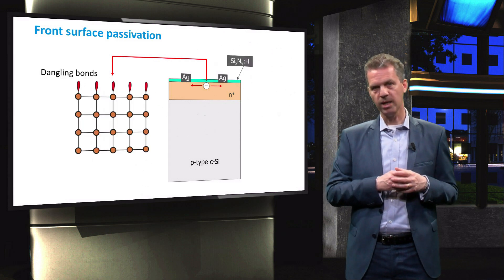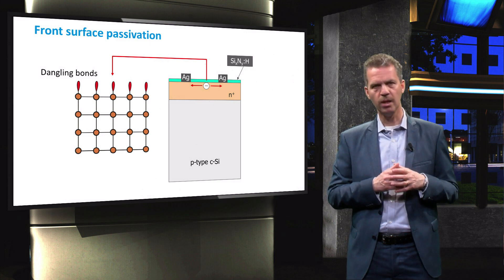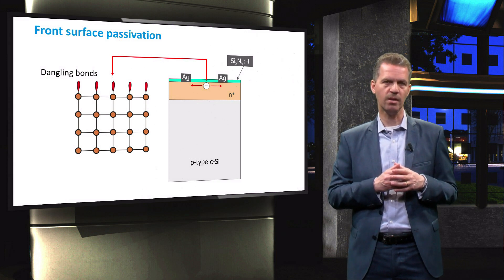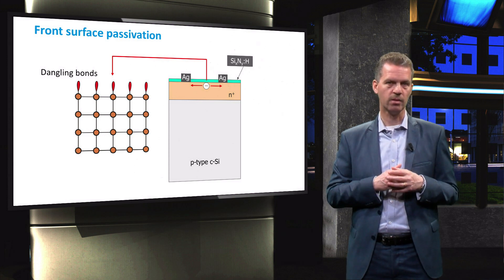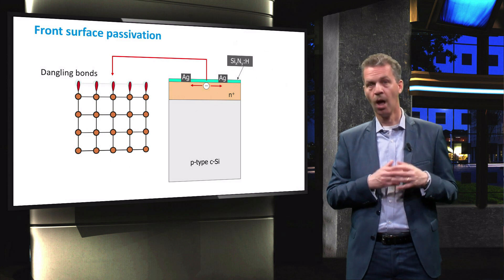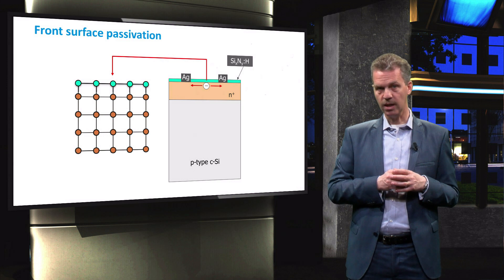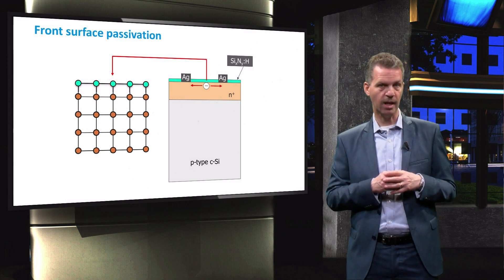This is realized by depositing a passivation layer, most commonly a thin layer of silicon nitride with plasma enhanced chemical vapor deposition. This production method is discussed in another video. The silicon nitride layer will passivate the dangling bonds and thereby reduce the trap density at the surface of the wafer.